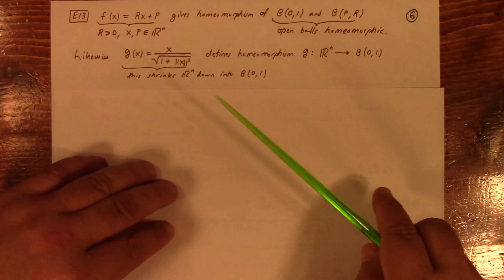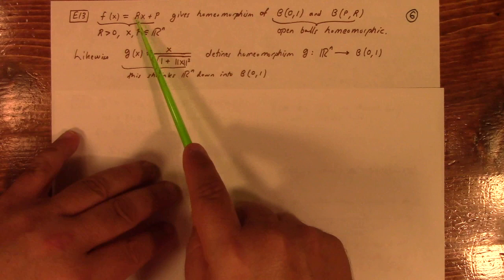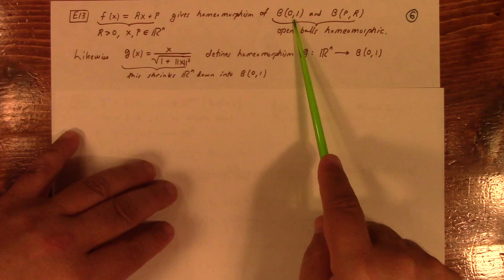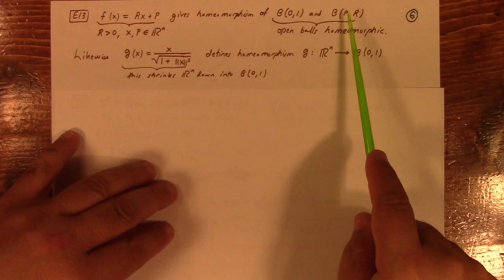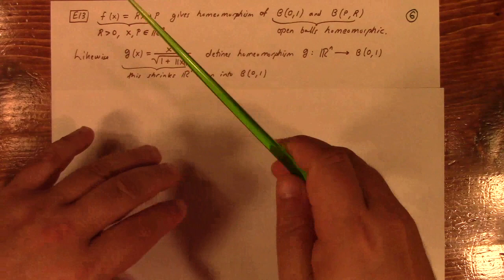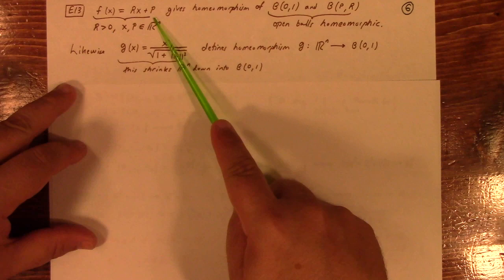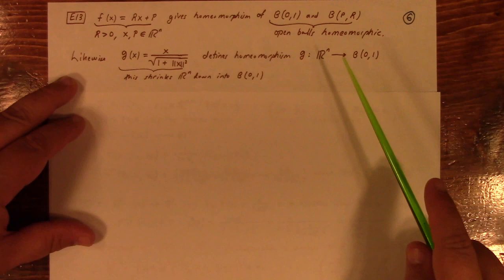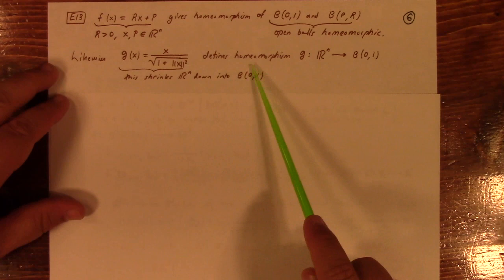So, this mapping here is for r greater than 0 and x and p points in R^n. This gives a homeomorphism of the open ball centered at the origin of radius 1 to the open ball centered at p with radius r. Basically, what this map is doing is it's stretching it out by r and then shifting it over by p, translating it by p. So that gives you the homeomorphism between two open balls. Any two open balls in R^n are homeomorphic by a mapping like this.